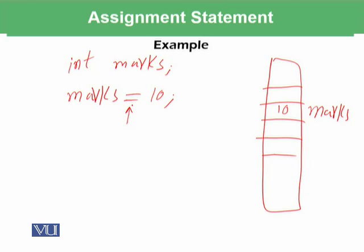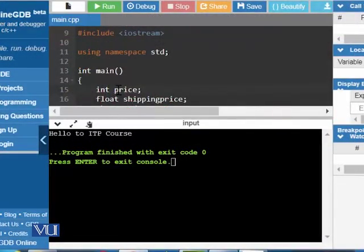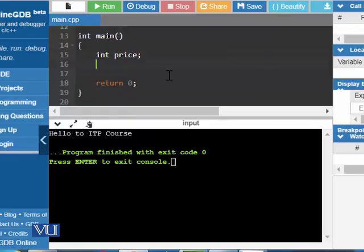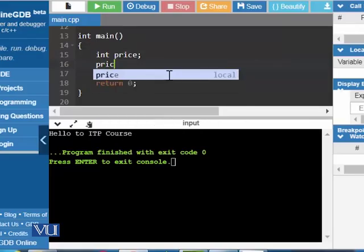So this means that 10 value is being stored at the memory location which is being referenced by the variable name mox. So let us do it programmatically. Like we have int price and if we assign price is assigned by 10.